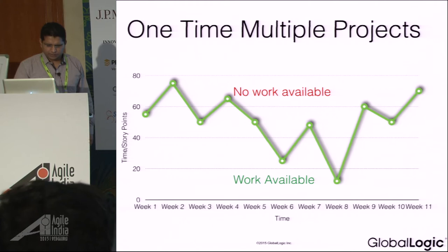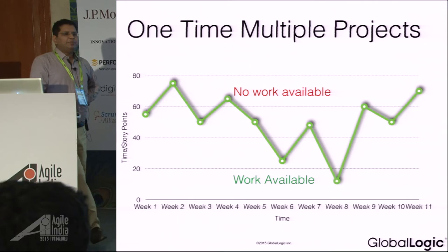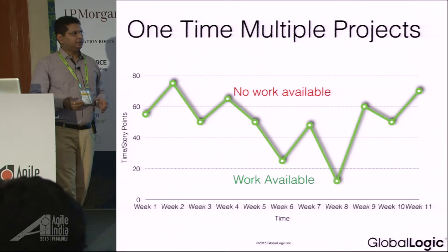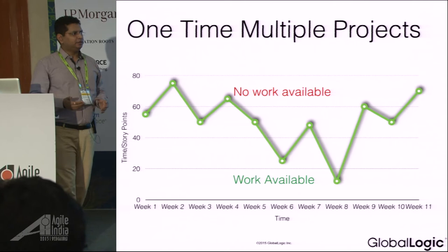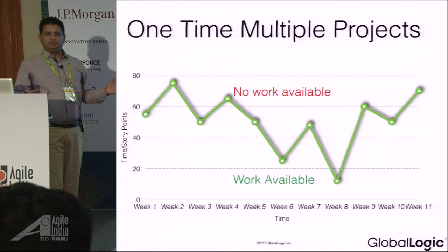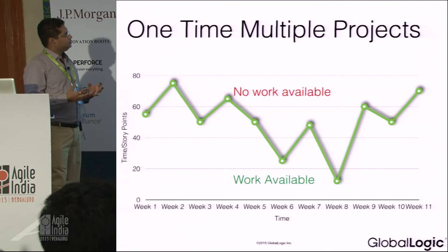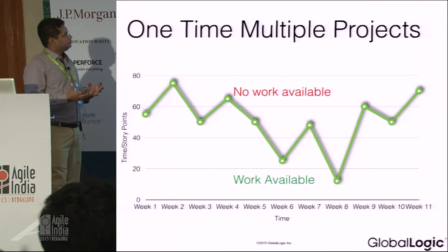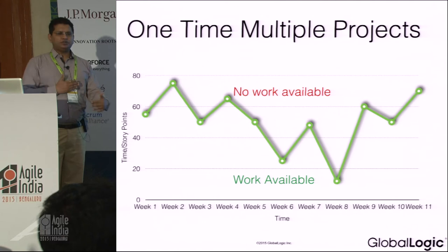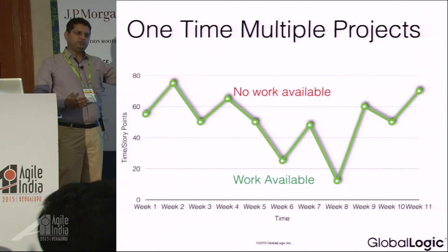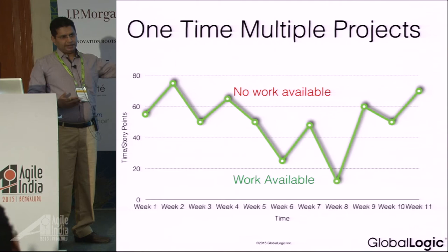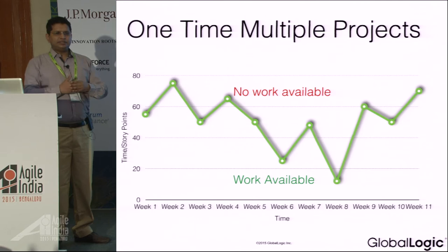The next pattern — one team, multiple projects. This works when, for example, you have a team of five people working in a maintenance mode. Sometimes there is a lot of work, sometimes there isn't. What we did was start doing pairing sessions between team members to make them cross-skilled. When a crunch situation comes in another project, that person can support it. And the customer can decide priority based on business need rather than based on which person is available.